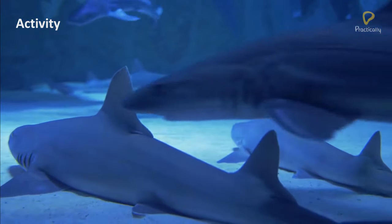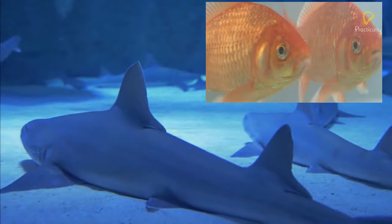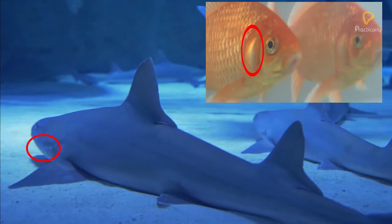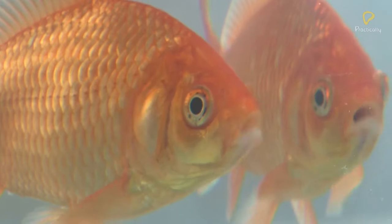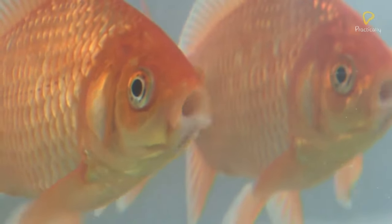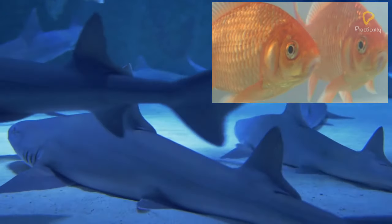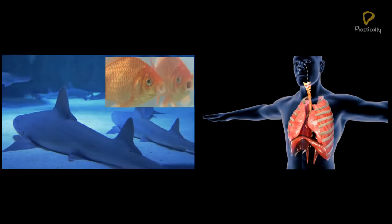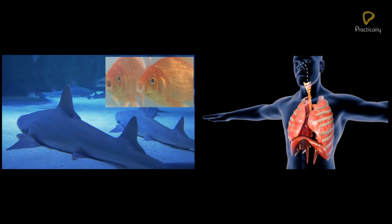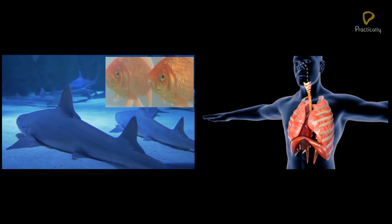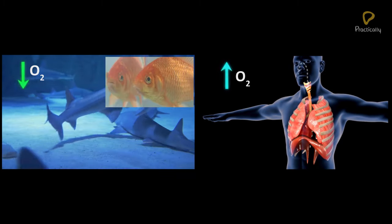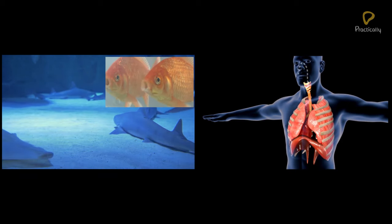Activity: Observe the fish in an aquarium. They open and close their mouths and gill slits, or the operculum that covers their gill slits on each side, behind their eyes. It can be observed that the opening and closing of their mouths and gills are coordinated and rhythmic. Count the number of times the fish opens and closes its mouth in a minute and compare this to the number of times you breathe in and out in a minute. The frequency of breathing in fishes is more than ours, because the amount of oxygen present in water is far less than in atmospheric air. Hence, aquatic animals have to breathe more frequently than terrestrial ones.